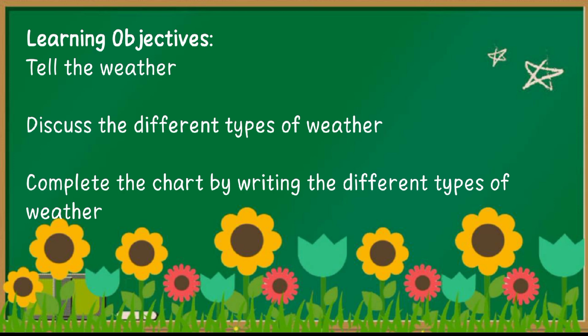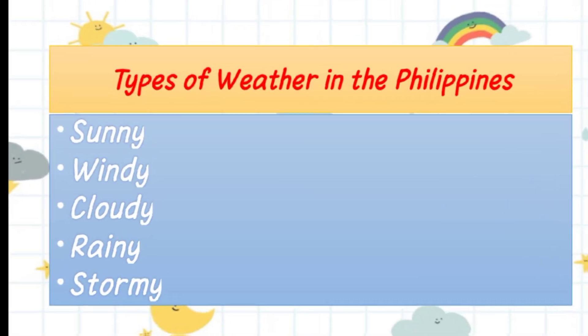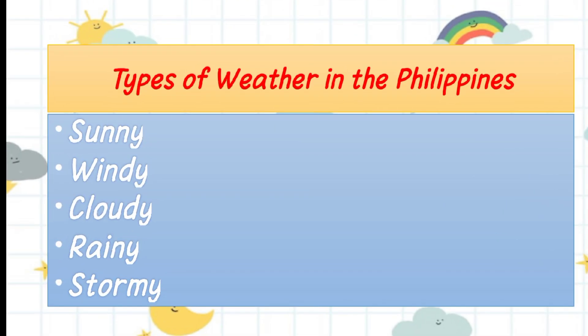What is weather? It refers to constantly changing conditions in the atmosphere. The types of weather in the Philippines are: sunny, windy, cloudy, rainy, and stormy.